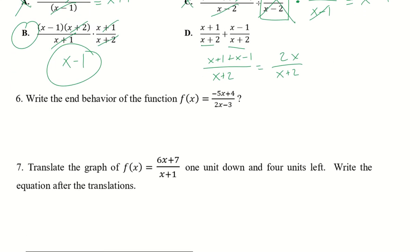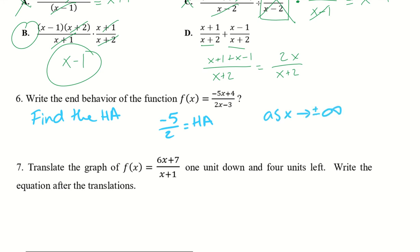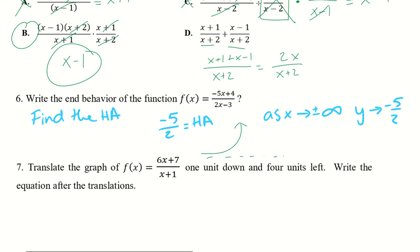For number 6, we want to write the end behavior of f(x). To figure that out we need to find the horizontal asymptote, which is at negative 5 over 2. That means as x approaches either positive or negative infinity, y is going to approach negative 5 over 2.